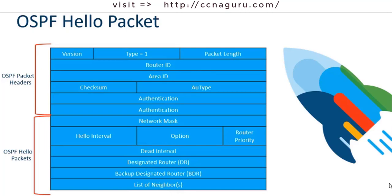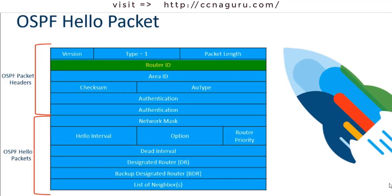Inside the OSPF packet header, the Type field informs the router whether it's a Hello, DBD, LSR, LSU, or LS Acknowledgement. The Router ID field holds a 32-bit value in dotted decimal notation that uniquely identifies the router that created the Hello message. The Area ID indicates the OSPF area number from where the packet originated.